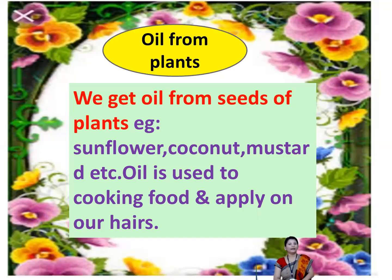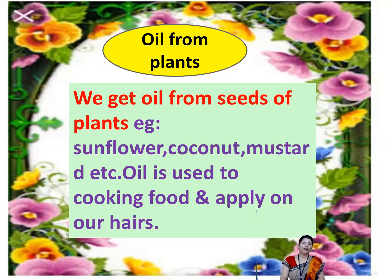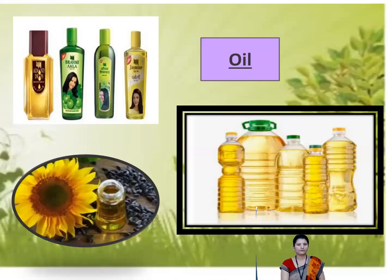We get oil from the seeds of plants. Examples include sunflower, coconut, mustard, etc. Oil is used for cooking food and also applied on our body. Here, the first picture and second picture show oil.